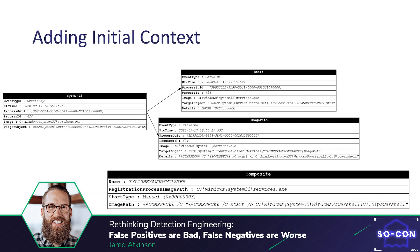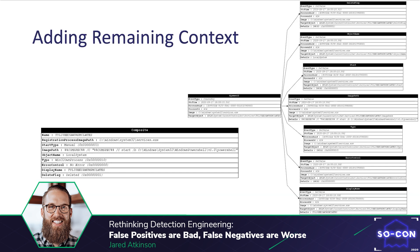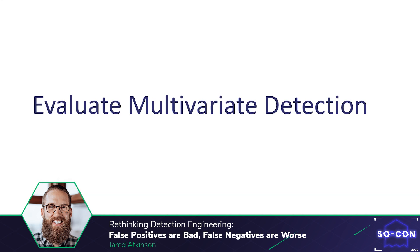Looking at the start and image path values — the start type is a numerical value we'd want to look up, and the image path in this case is powershell.exe with an encoded command. We can then add these values to our composite event. Enumerating the remaining values, we find: DeleteFlag, ObjectName, Type, ErrorControl, and DisplayName respectively. We can now build our final version of the composite event to represent this service creation event. There are definitely other opportunities to add context, such as whether the event was created remotely and what process initially requested the service to be created — services.exe created the registry key but as an RPC server, it is likely some other process like sc.exe made the initial request.